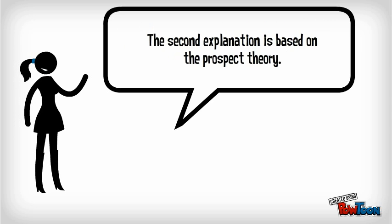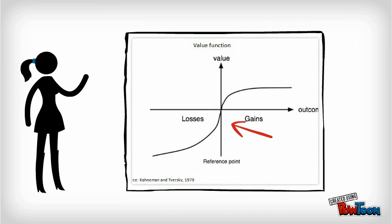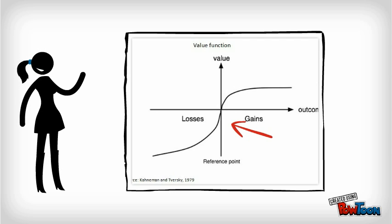The second explanation is based on prospect theory. For decision makers the value function is steepest around the reference point which is zero. Therefore, if the outcome, for example earnings change, is slightly lower than zero, the value for the decision maker declines most. This provides incentives to manage earnings.